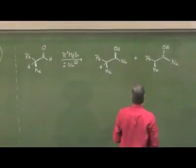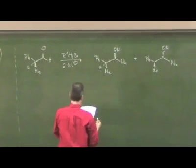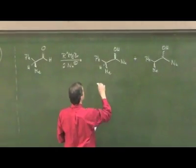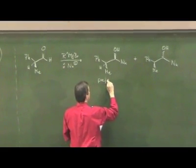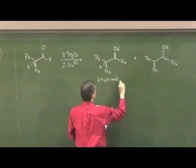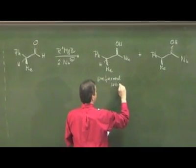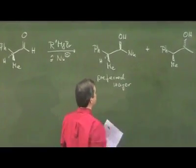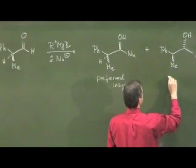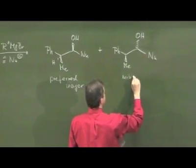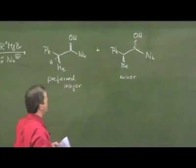And in this case, the experimental evidence was that this compound is the major diastereomer being formed. And this one would be the minor.